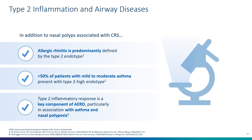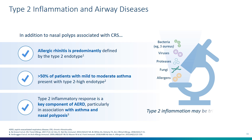We recognize that type 2 inflammation can be driven by bacteria, viruses, proteases, fungi, and allergens, and it can occur in an atopic and non-atopic manner. In the next series of slides, we're going to do a deep dive into the molecular pathways by which type 2 inflammation occurs in the airways.